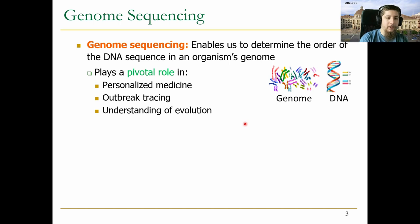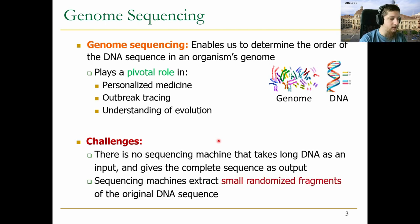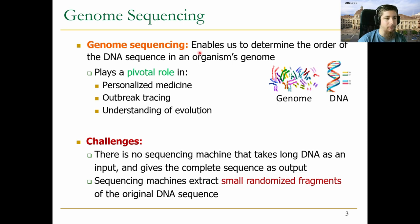There are some challenges here. If you want to computationally analyze such a genome, you have to take a physical sample and get a digital version of it — for that you need a sequencing machine. None of these machines take a long DNA as input and give the entire thing in one piece as output. Instead, all sequencing machines output small randomized fragments of this genome. This poses some computational challenges which we target in bioinformatics.